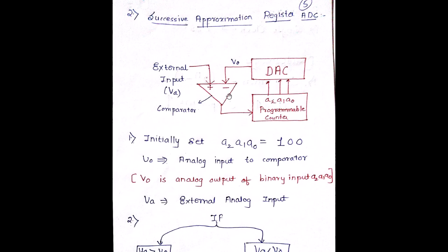It is given to a DAC which gives output as V0, the digital to analog converter. Now this comparator has two inputs: one is the external input VA and the other one is V0.